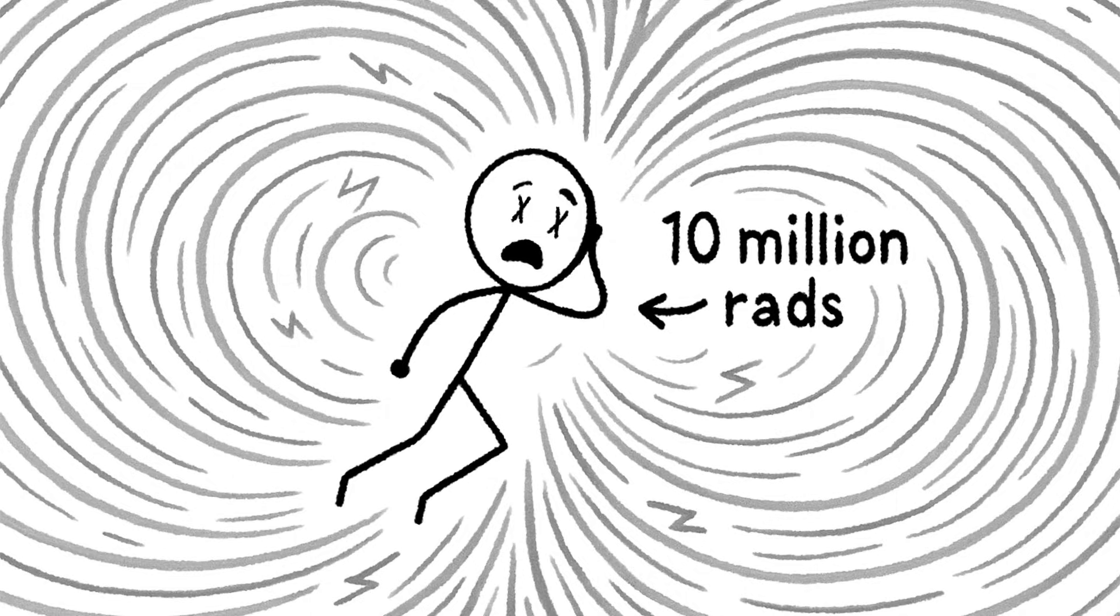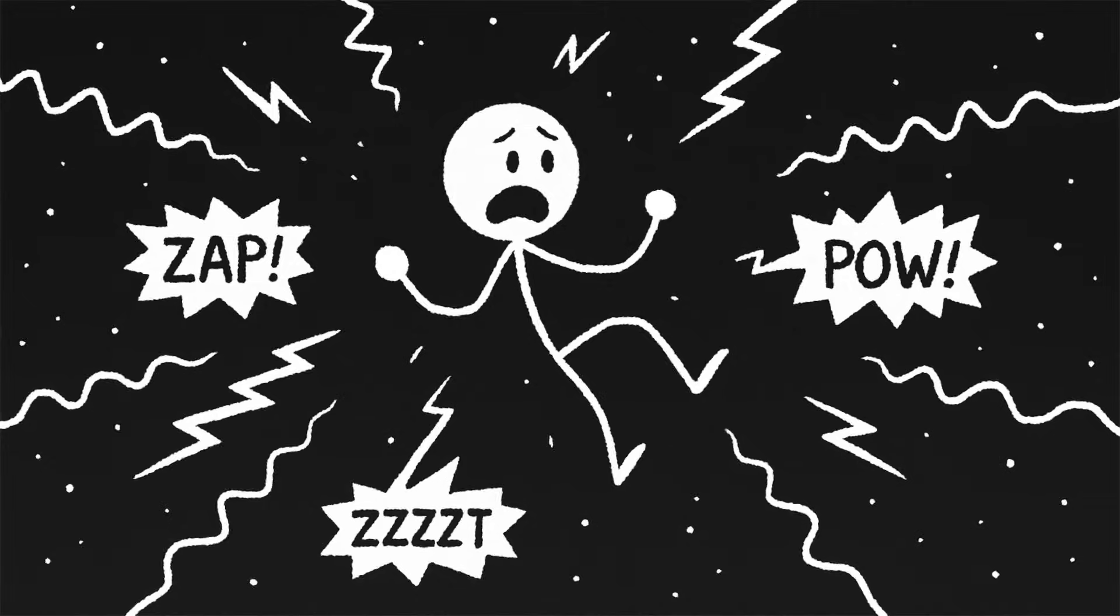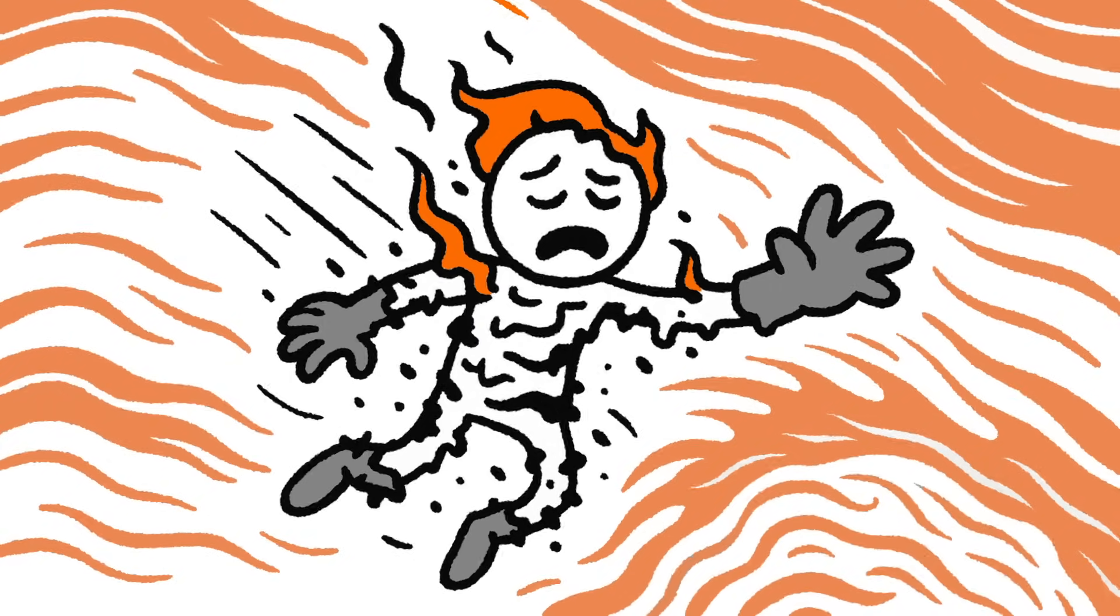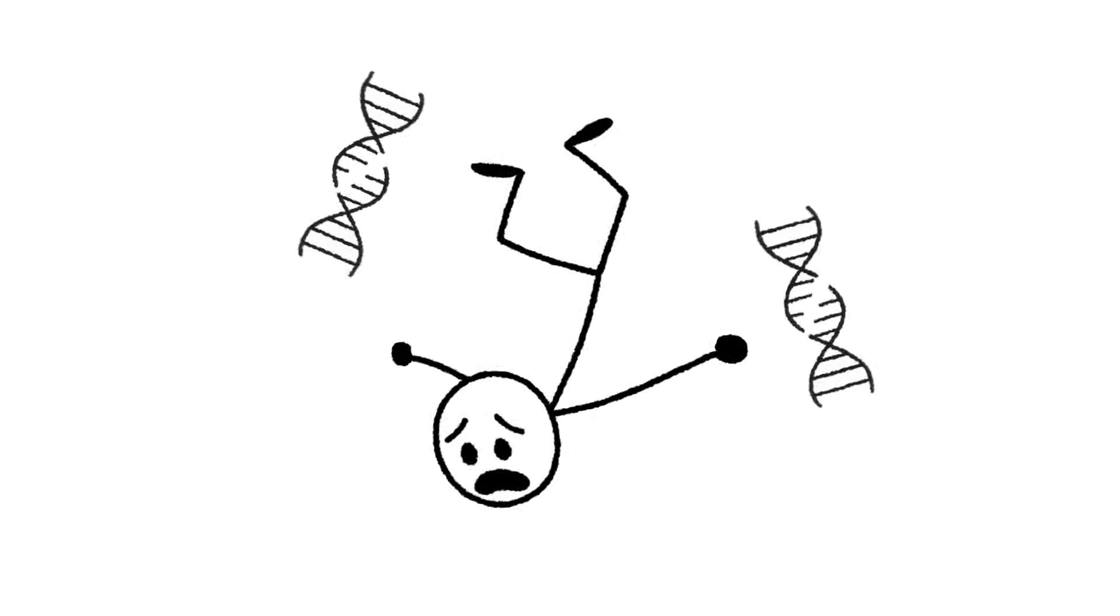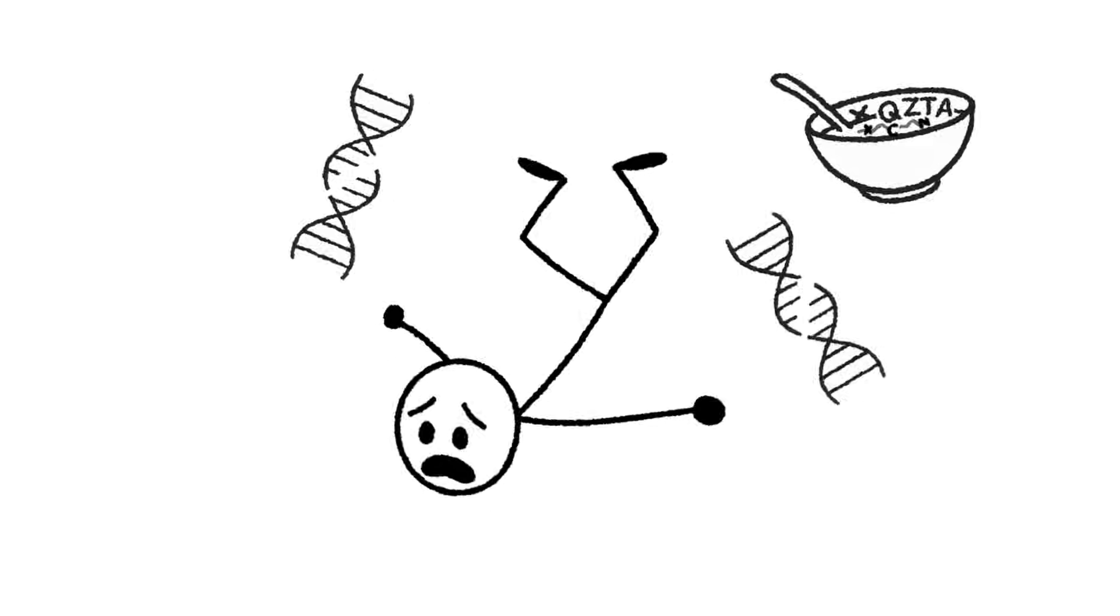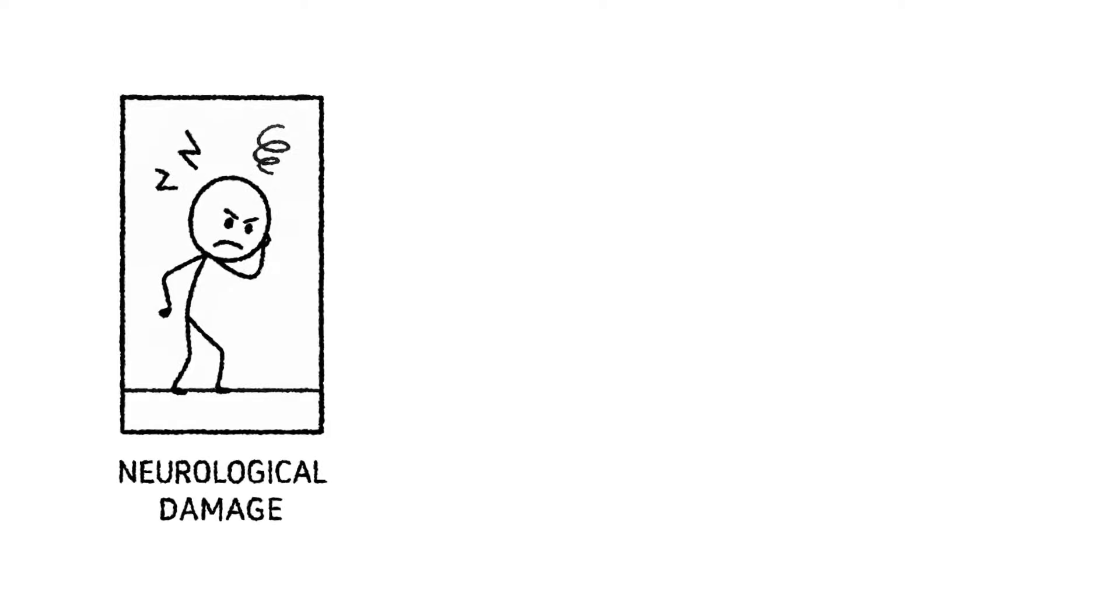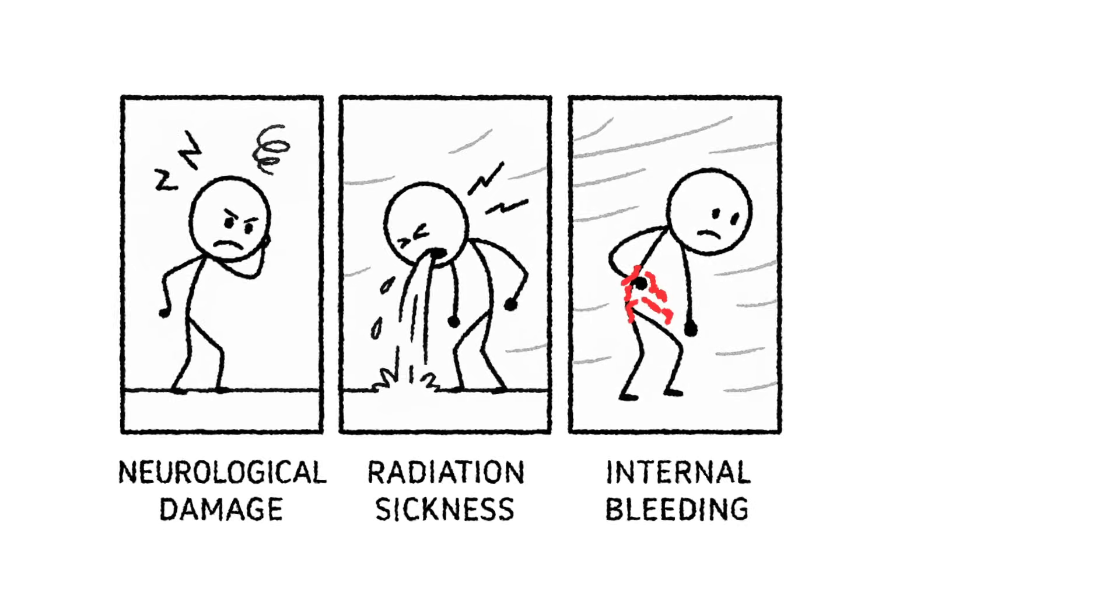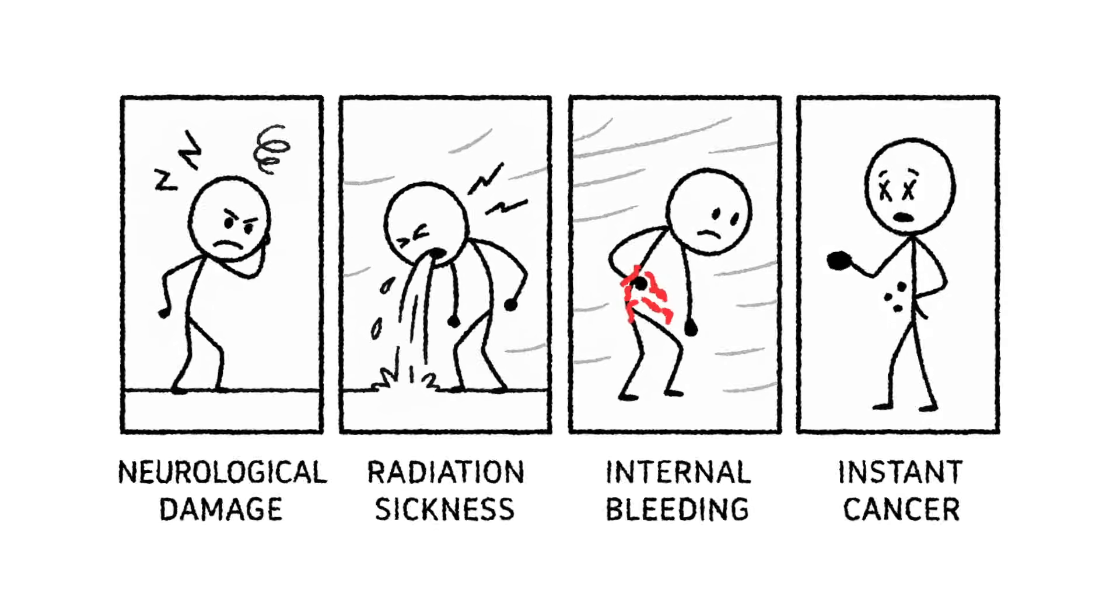Jeff? He's got 20,000 times that before he even blinks. Within minutes, he's been nuked by high-energy electrons, protons, and heavier ions, all zooming around at near light speed. His spacesuit? It's not built for this. His radiation shielding? Basically wishful thinking. Inside, Jeff's cells are going haywire. His DNA is getting diced, scrambled, and rewritten like someone spilled alphabet soup on a hard drive. He's dealing with neurological damage, radiation sickness, internal bleeding, and a future filled with instant cancer. Assuming he had a future.